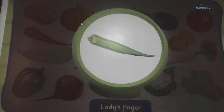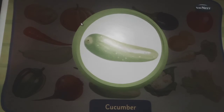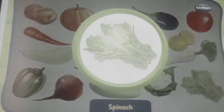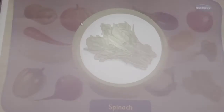This is a lady's finger, it looks like a human finger. These are green peas, they have small peas inside. This is a cucumber, it is used in salads. This is spinach, it is a leafy vegetable.